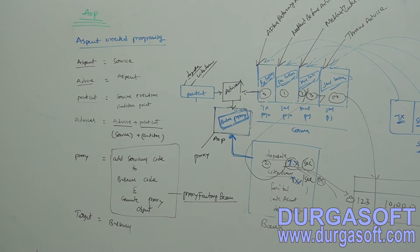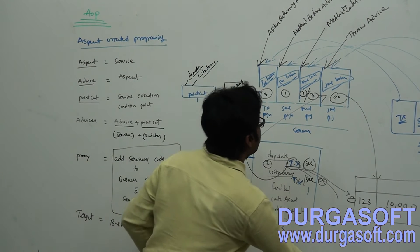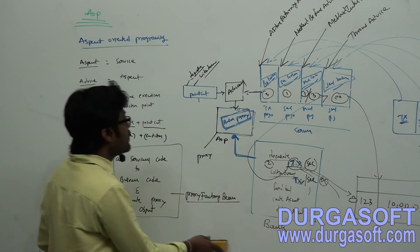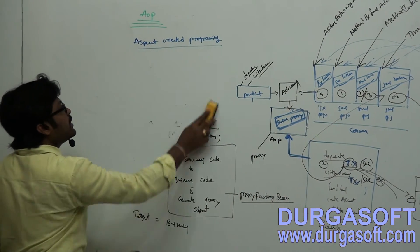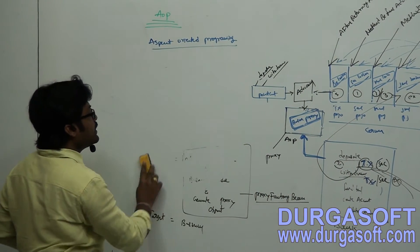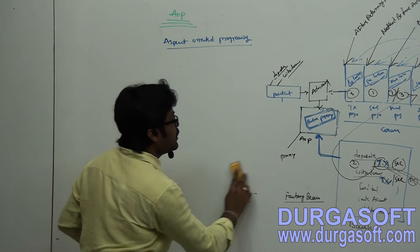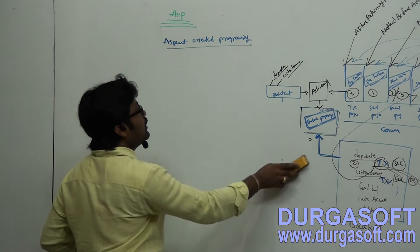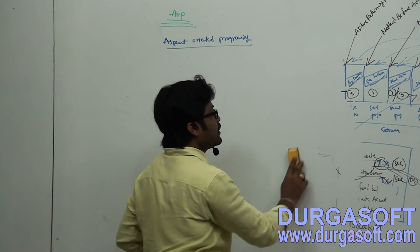Whenever you get exceptions in your business, on those exceptions it will execute that service. So there are four advisors to implement your services: method before advice, after returning advice, method interceptor, and throws advice.